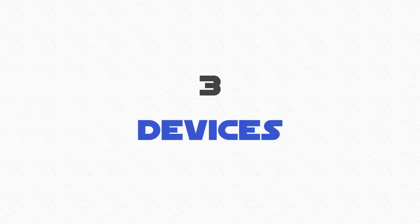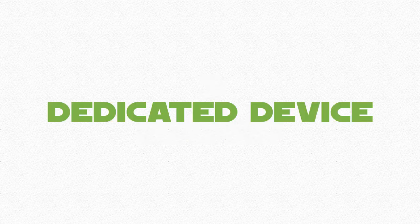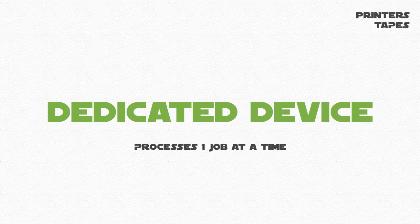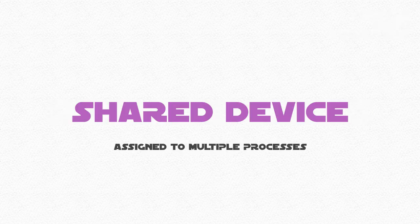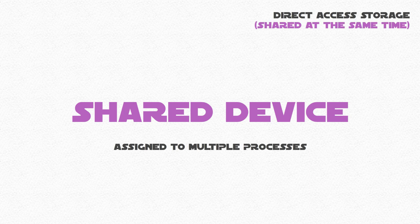There are three types of devices to take into account. A dedicated device processes one job at a time. These are devices like printers, tapes, and floppy disks. A shared device can be assigned to multiple processes, like direct access storage, and these processes can be shared at the same time by interweaving requests.